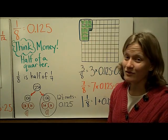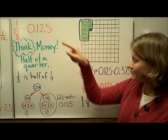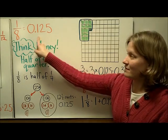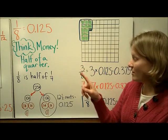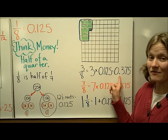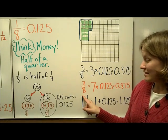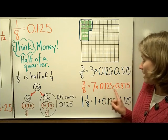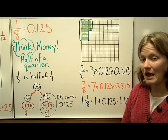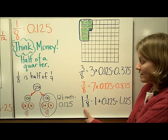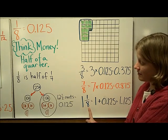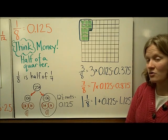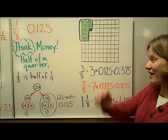So if we think about 3 8ths, we would do 3 times this amount, the amount for 1 8th and get 0 and 375 thousandths. 7 8ths we would do the same thing, multiply 7 times the amount for 1 8th and we would get 0 and 875 thousandths. 1 and 1 8th would be like a dollar and a half of a quarter, which would be 1 and 125 thousandths.